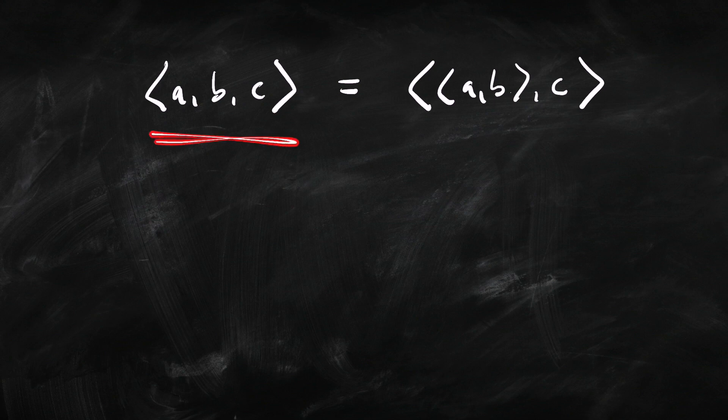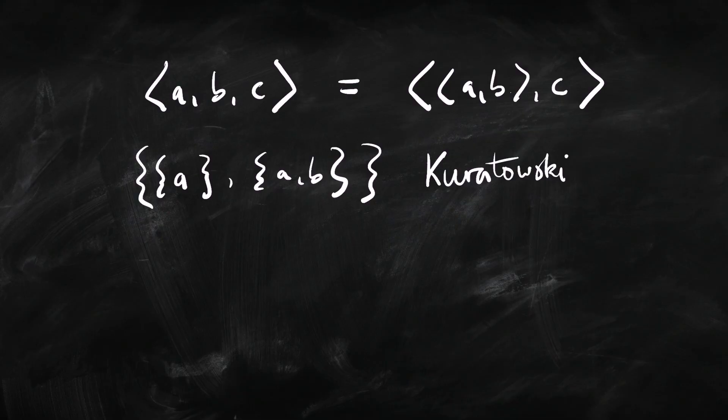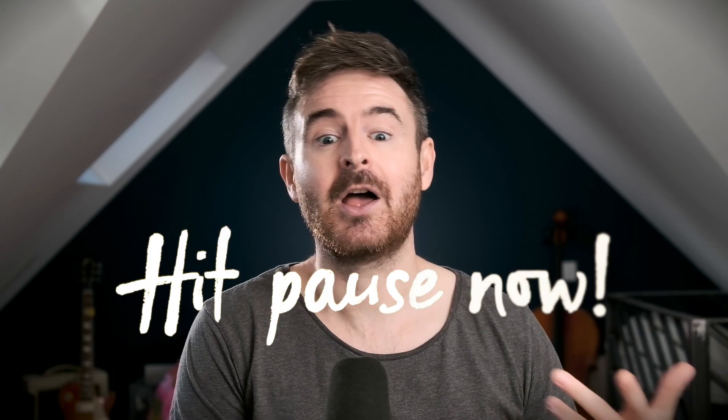So the last thing I want you to do today: think through how we would code up this triple as just an unordered set using the Kuratowski definition. We're going to use the triple-as-pair reduction plus the coding of pairs into sets. Why don't you pause the video at this point, think through how you do that, and then come back and I'll show you how we do it.